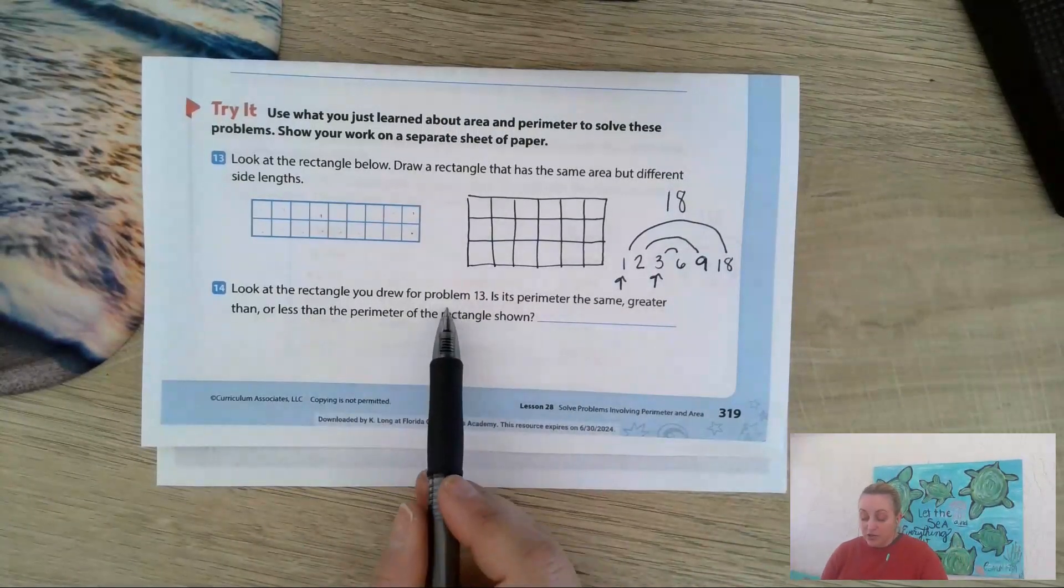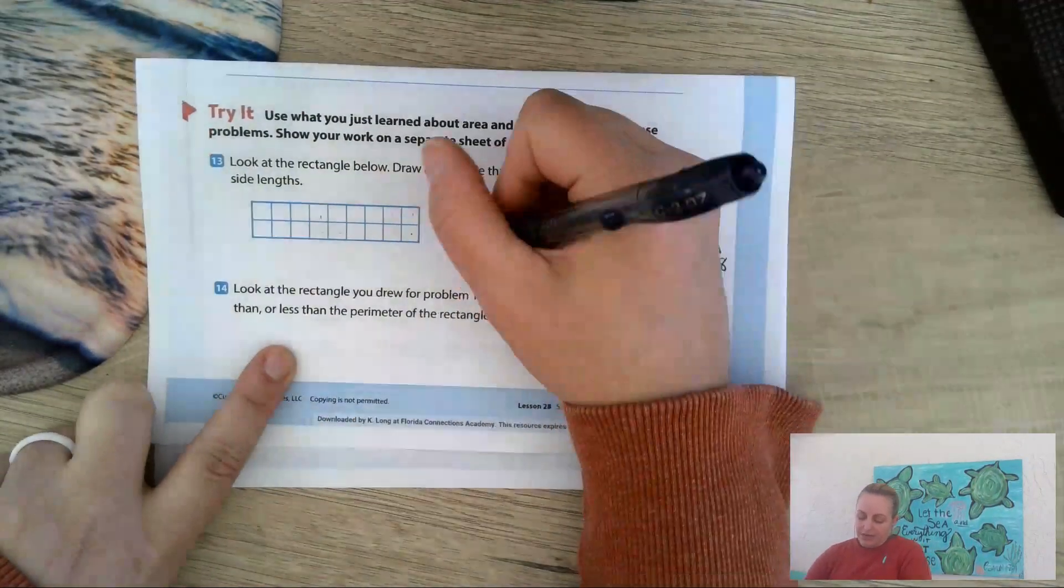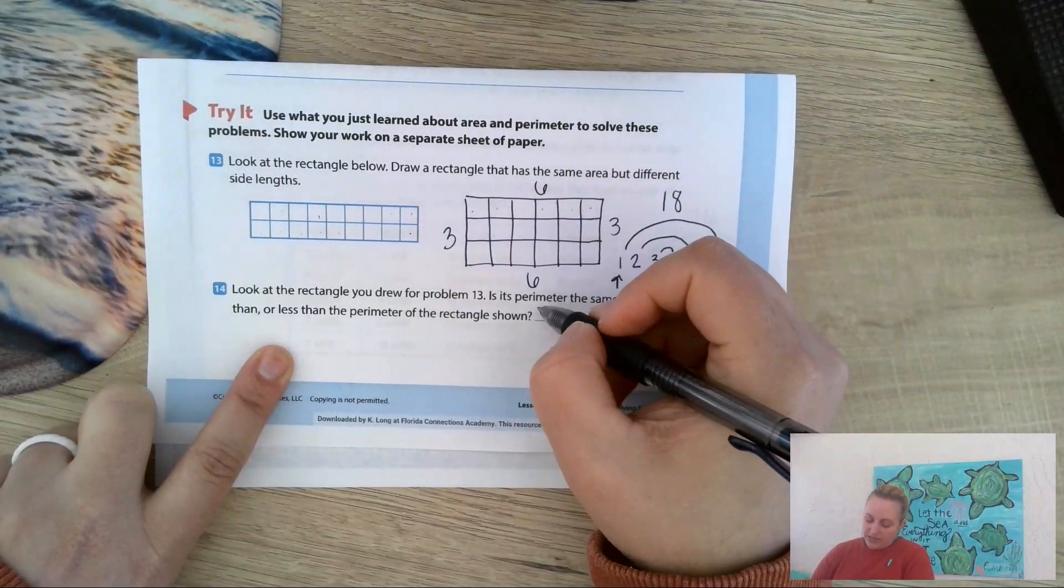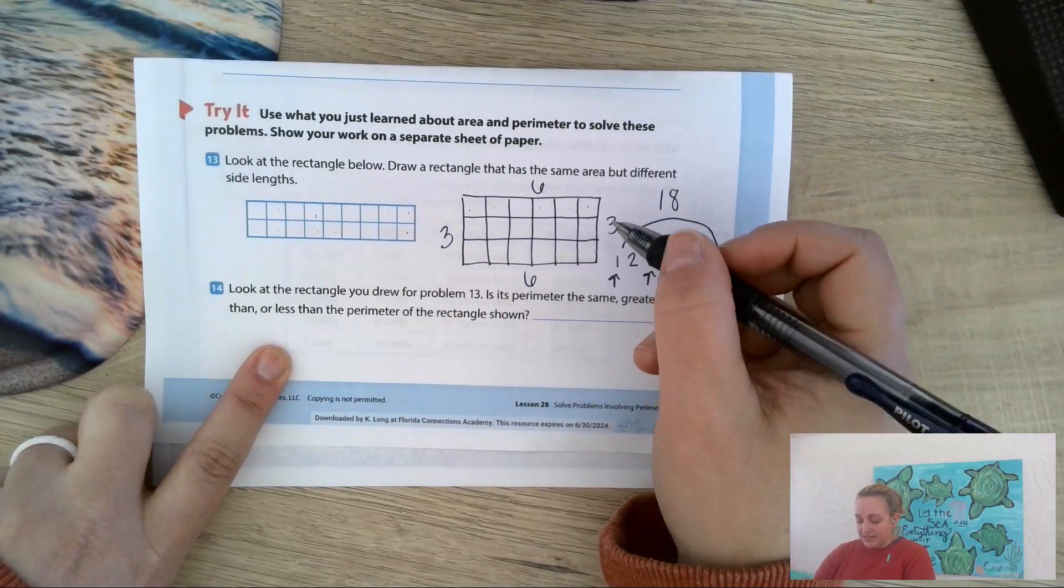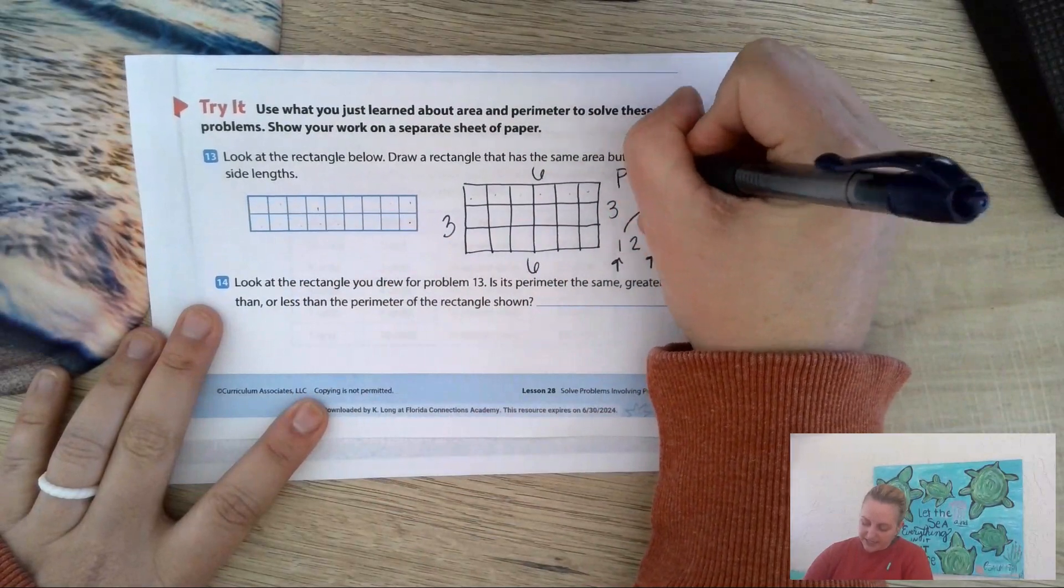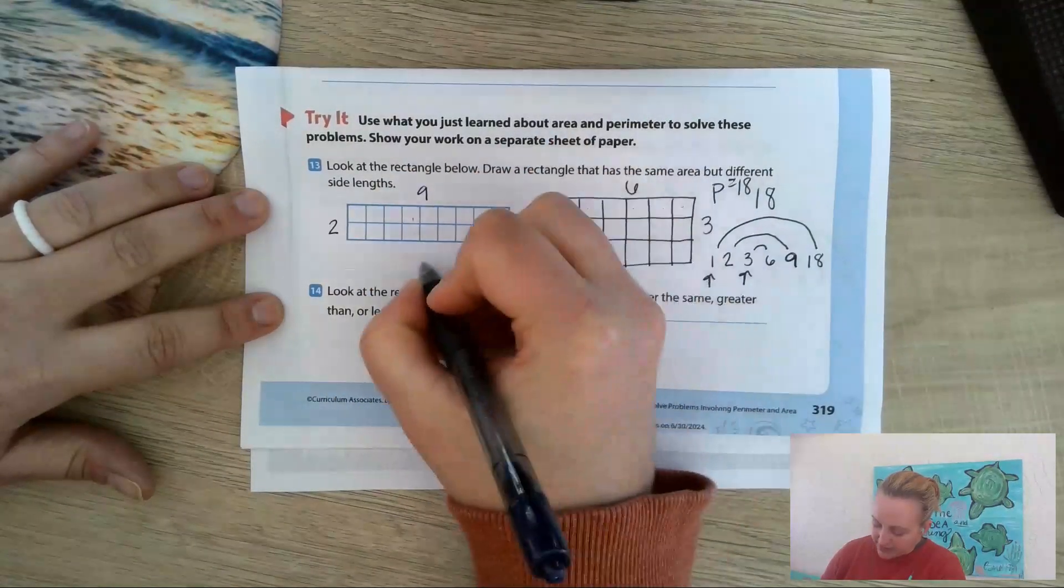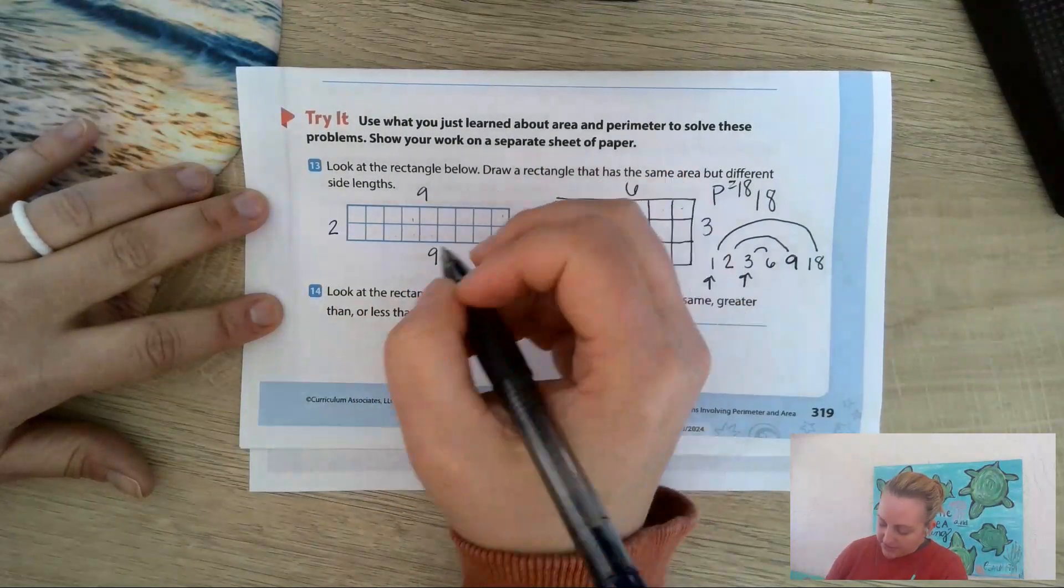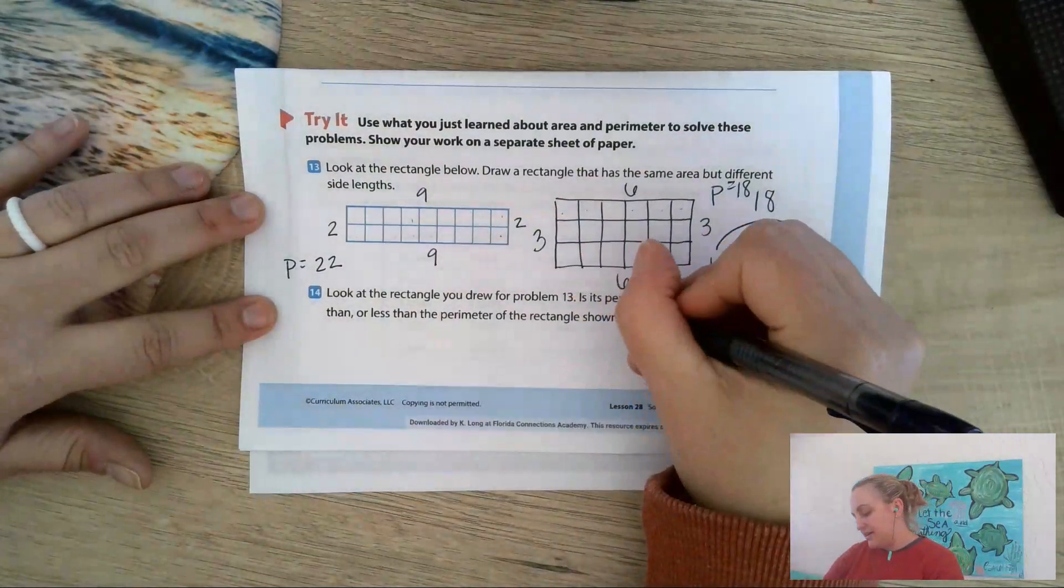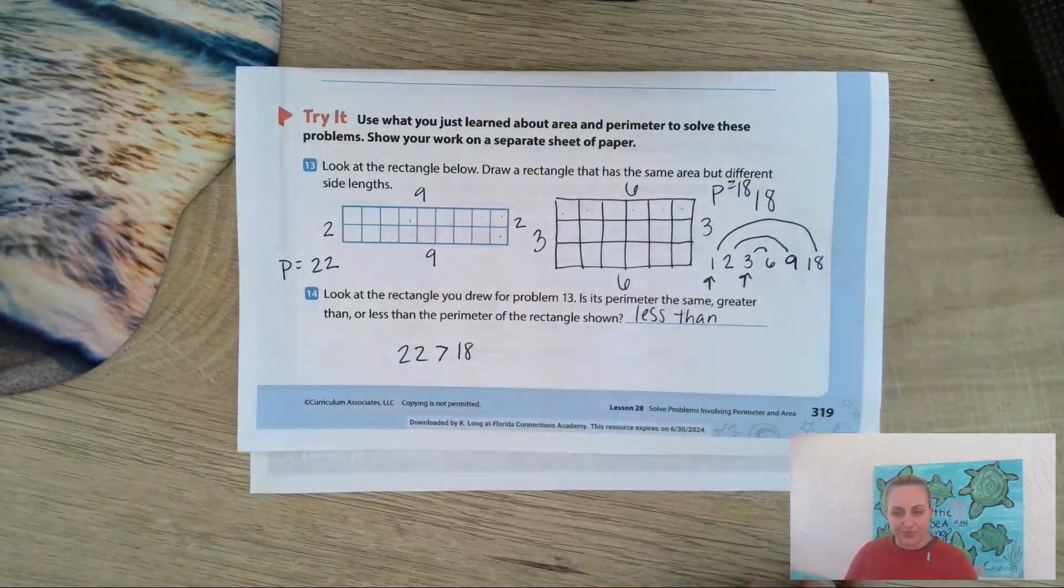So I still have an area of 18. What would be my perimeter? It says, look at the rectangle you drew for problem 13. What would be the perimeter? Is it the same, greater than, or less than the perimeter of the rectangle shown? Well, now I have three, 1, 2, 3, 4, 5, 6, three, and six. Three plus three is six, and six plus six plus six equals 18. So my shape has a perimeter of 18. This shape, we never even figured out the perimeter, but let's go ahead and do it, has two plus nine plus two plus nine. Two plus nine is 11, and 11 plus 11 is 22. So which perimeter is bigger? Mine is less than this, because 18 is less than 22.